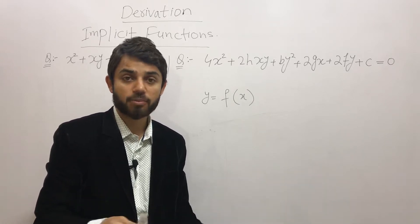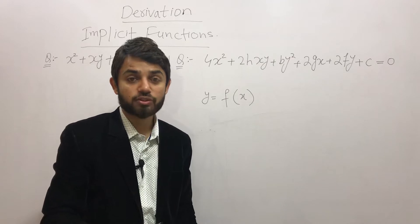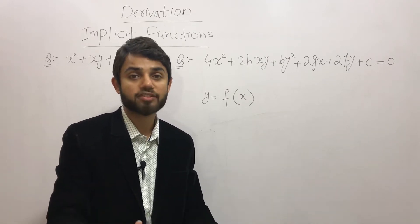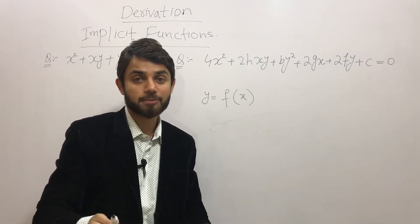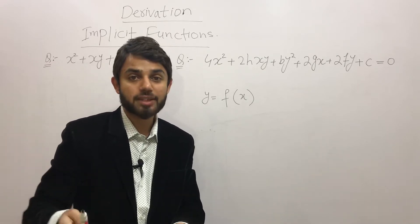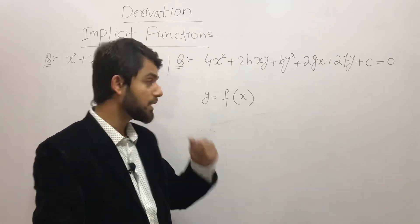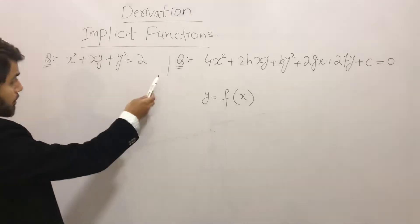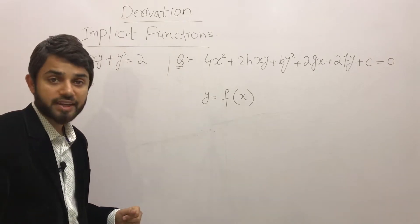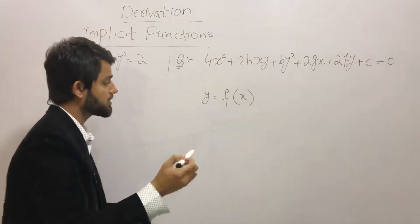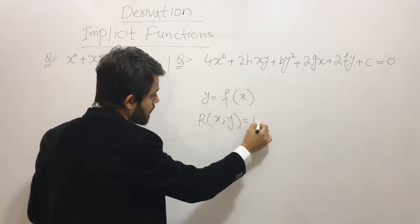When it is difficult to separate the dependent variable from the independent variable, we say the function is an implicit function. A memory trick: explicit means 'explainable' and implicit means 'impossible' to separate. The general form of an implicit function can always be written as F(x, y) = 0.